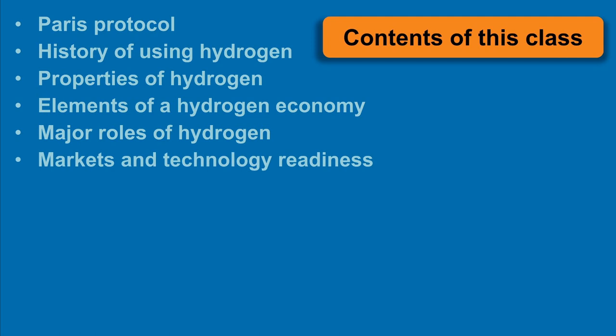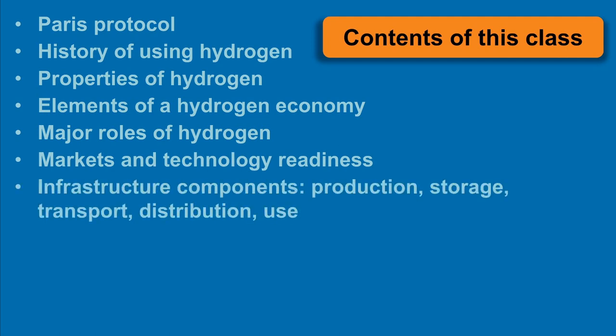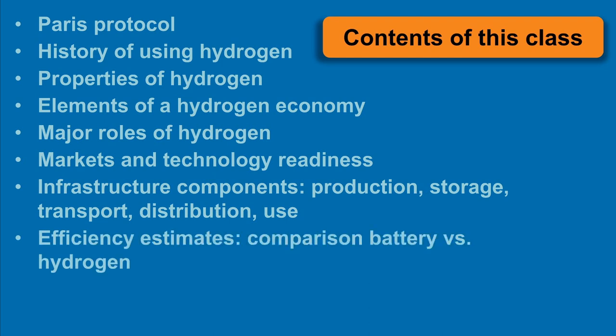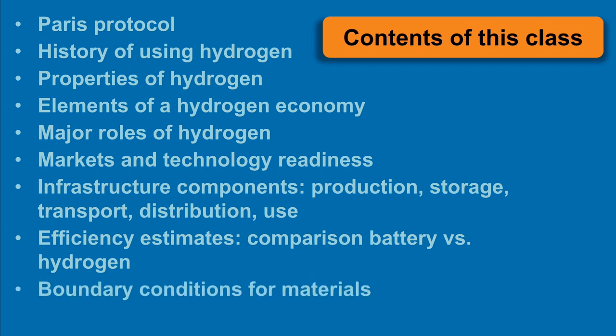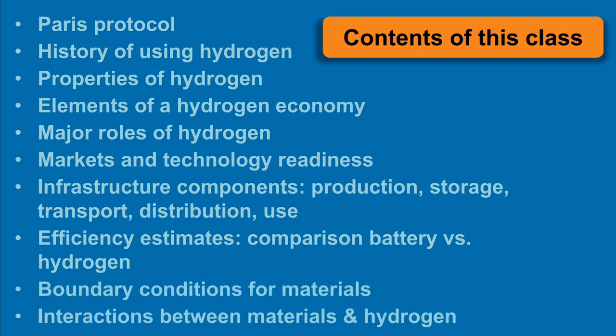Special attention is placed on the most important infrastructure components. Further, we discuss some efficiency considerations and boundary conditions for materials in terms of temperature, mechanical pressure, and chemical partial pressure. This is needed to understand the nature of the multiple interactions between materials and hydrogen.